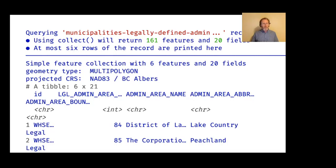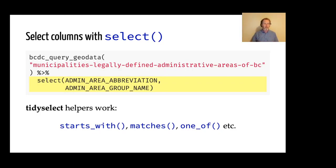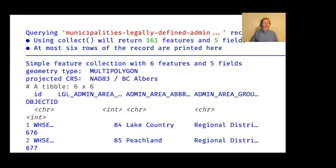If you're familiar with the dbplyr framework and dplyr in general, we can pipe bcdc_query_geodata into select to select just a subset of columns. It works with all the tidyselect helpers: starts_with, matches, one_of, etc. Here we're selecting two columns: the admin area abbreviation and admin area group name of those municipalities in BC. This isn't actually running the query and downloading the data, just giving a preview. We still have 161 features because we haven't used filter, but we're only getting five fields — the two we asked for plus a few sticky columns like object IDs that come along for the ride.